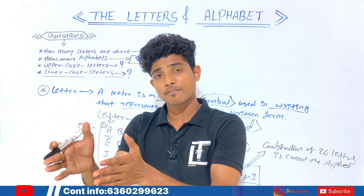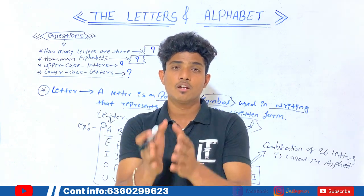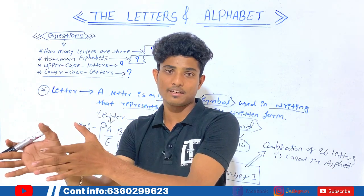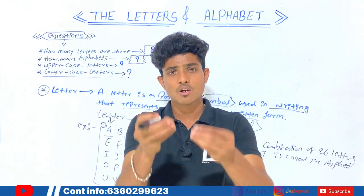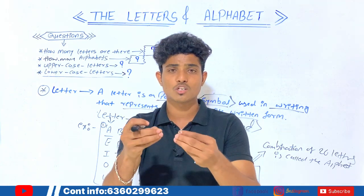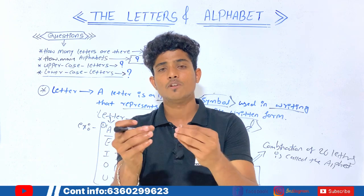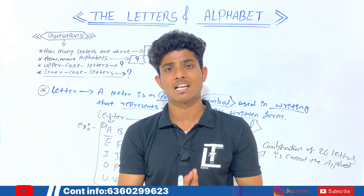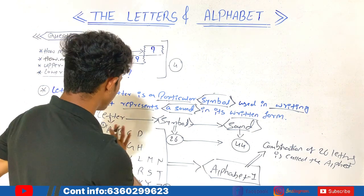In the same way, the Hindi language has a total of 46 letters, and those 46 letters collectively are called the Hindi alphabet. So English also has 26 letters, and the combination of these 26 letters is called the alphabet, which means we have a total of one alphabet in the English language.